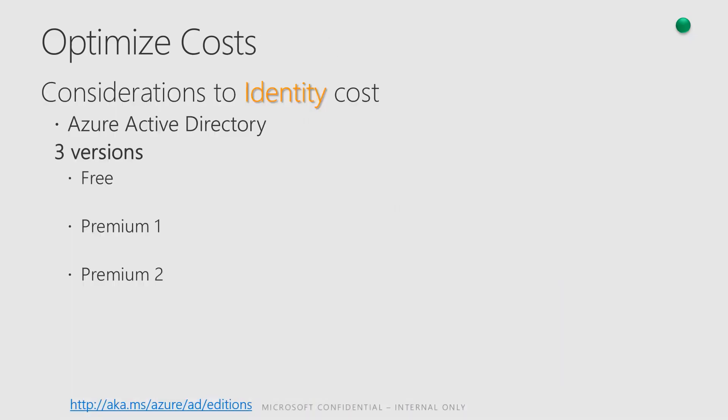For identity costs with Azure Active Directory, there are different versions: Free, P1, and P2. Know the features for the exam — click the link at the bottom to understand what you get with Premium 1 and Premium 2. With the Free tier, you're limited to 500,000 objects and 10 apps per user, but there's no SLA. P1 only lacks identity protection, PIM, and access reviews. One way to reduce costs with Azure Active Directory is to use an enterprise agreement.